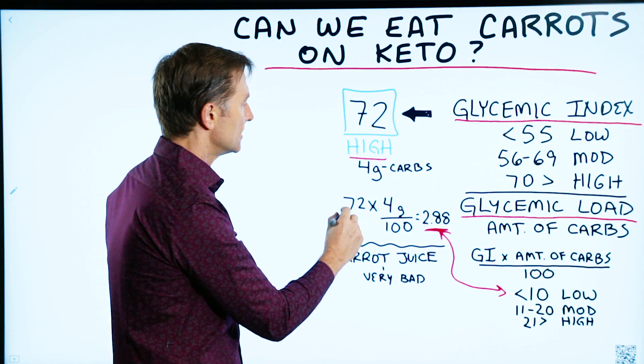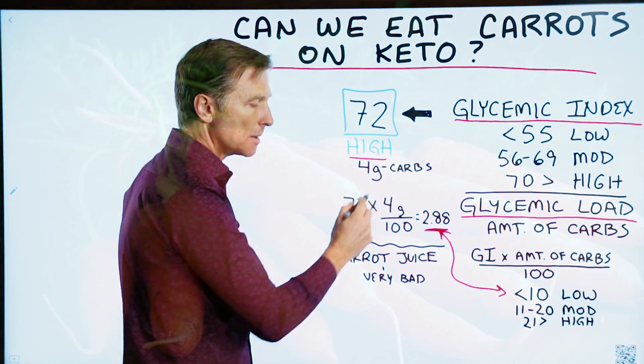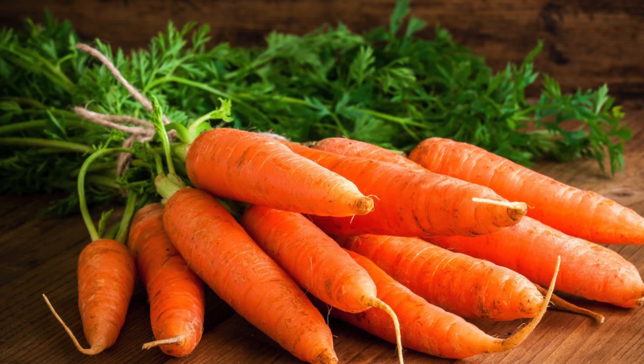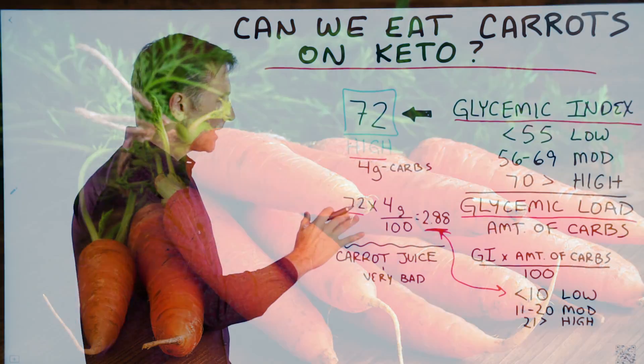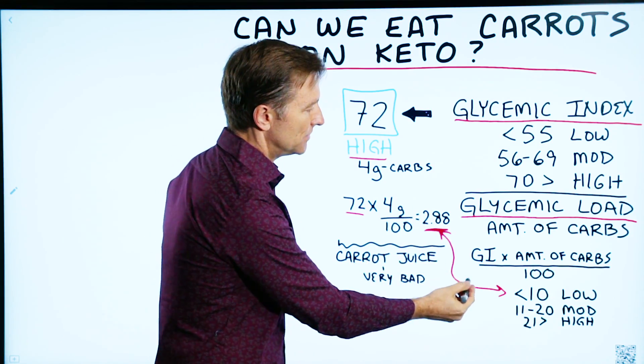If we take 72, which is the glycemic index, times 4 grams of carbs for a medium-sized carrot divided by 100, equals 2.88, which is very low.